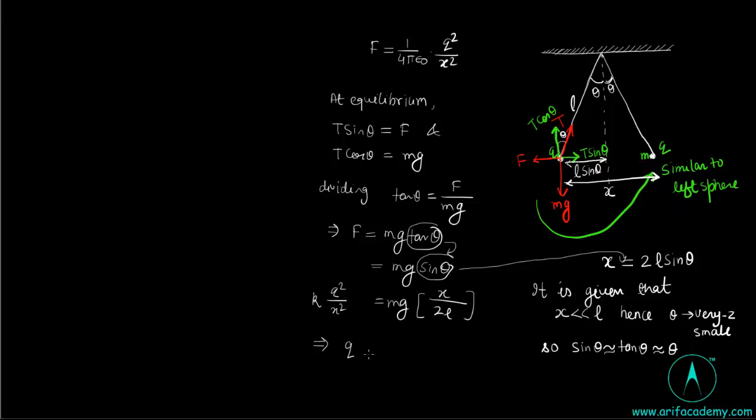K Q square will be equal to, transferring other quantities to the other side of the equal sign, Mg upon 2K L x cube.